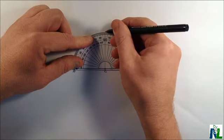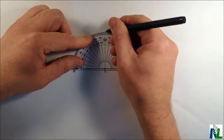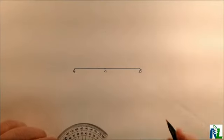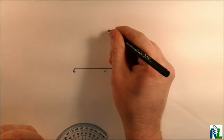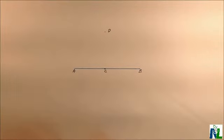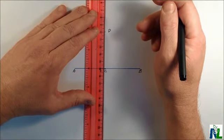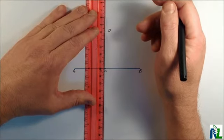So above the 90 mark, I'm going to just make a small little dot. I'm going to call that point D. Now with the ruler, I'm going to connect C and D.